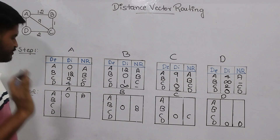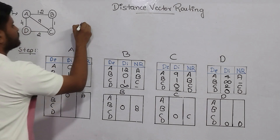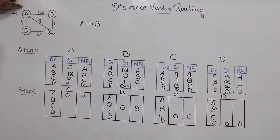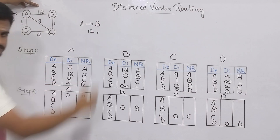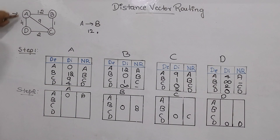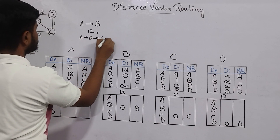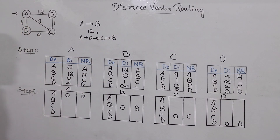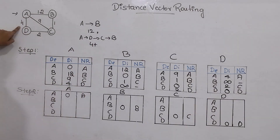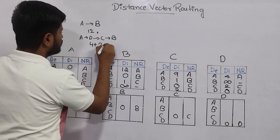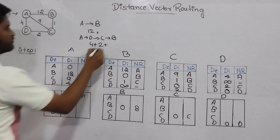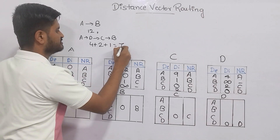Now let's fill the other values. From A to B, you can directly move with distance 12. Or from A, you can come to D, then D to C, then C to B — that path is A→D→C→B. The value is 4 + 2 + 1 = 7. Another path: A→C→B gives 9 + 1 = 10. So the three possible paths give 12, 7, and 10.